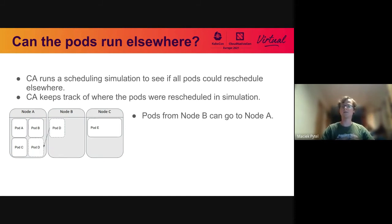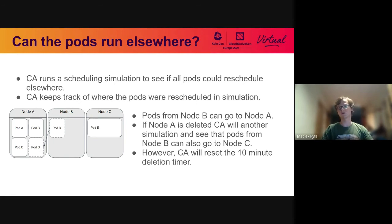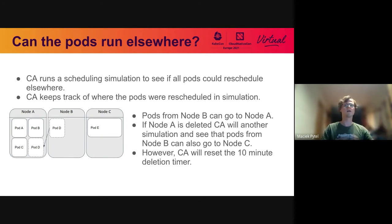Similarly for node B: pod D running there could be rescheduled to node A, and if node A was deleted, Cluster Autoscaler remembers it was going to move pods to node A and therefore it may no longer be safe to delete node B. In that particular case it is actually still safe because pods could also be moved to node C, and Cluster Autoscaler will figure that out. However, the 10-minute deletion timer would be reset because Cluster Autoscaler only keeps track of a single way of deleting a node and loses confidence when that destination is gone.